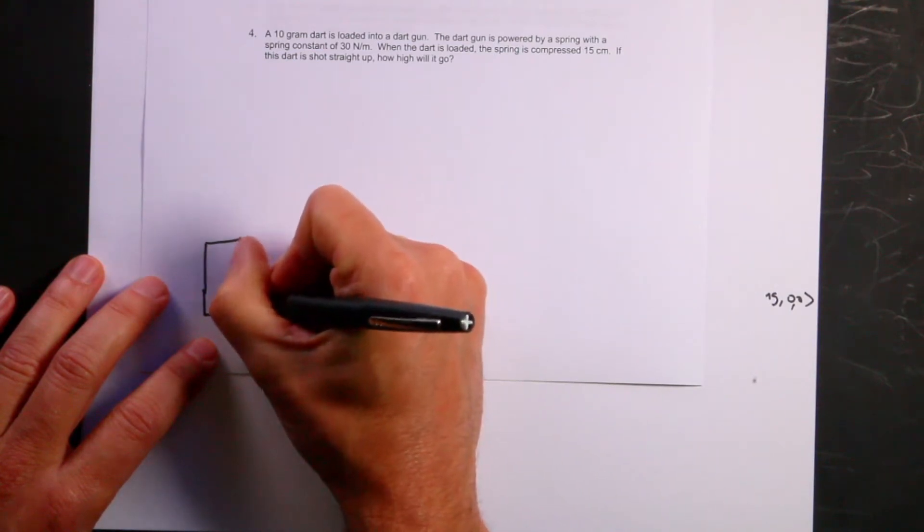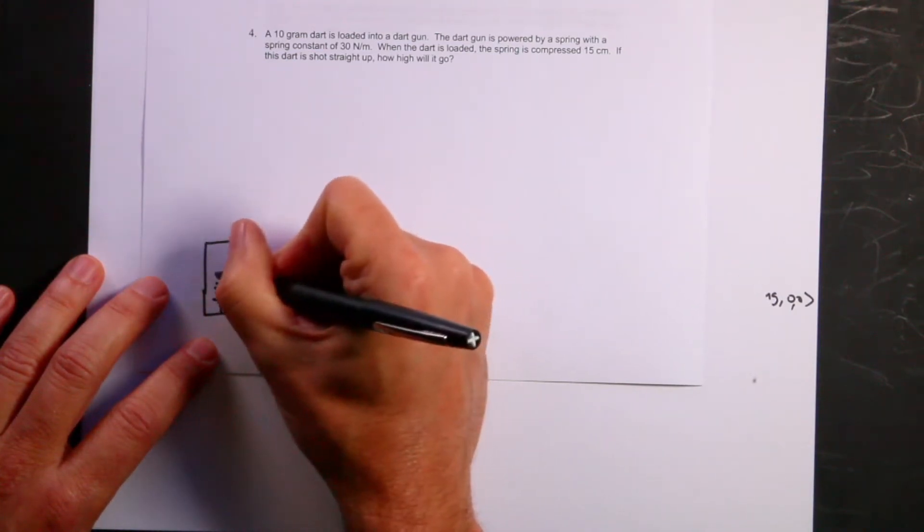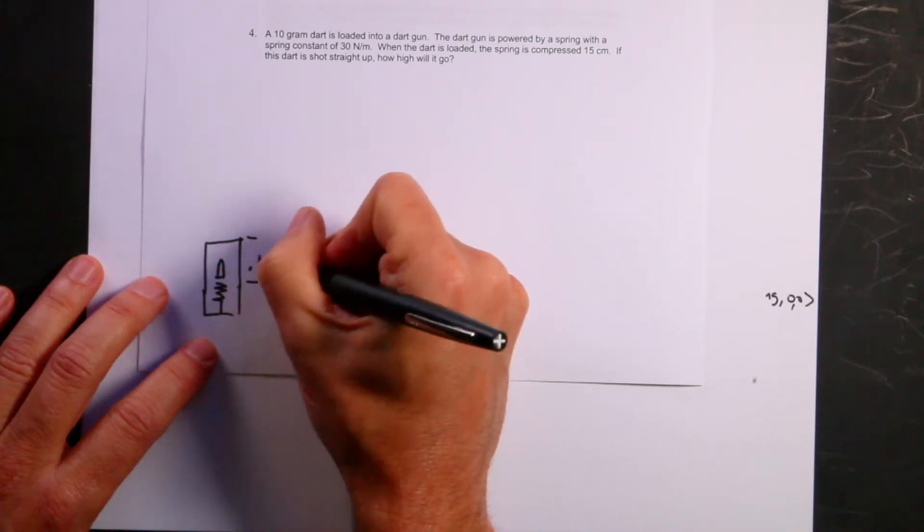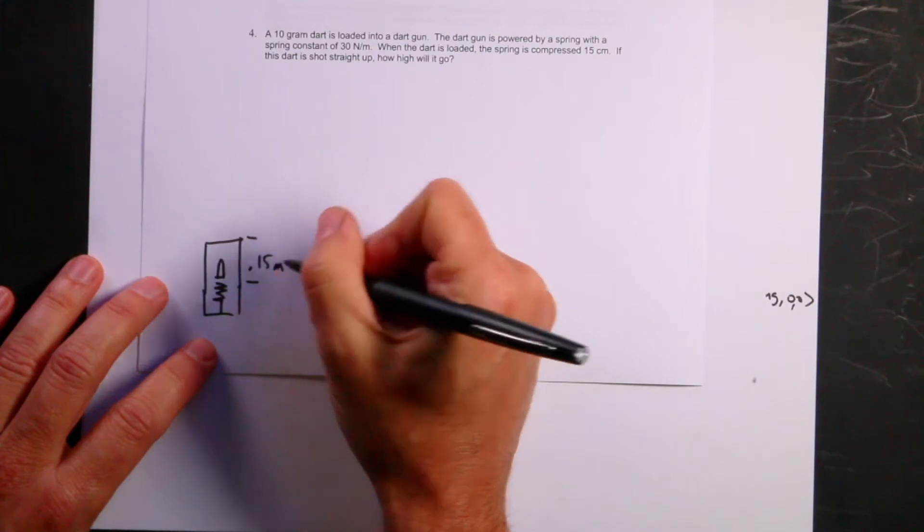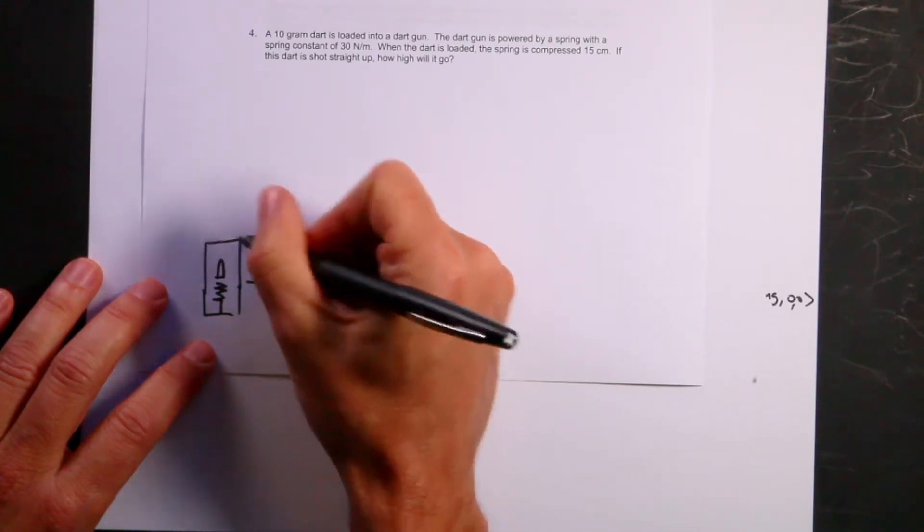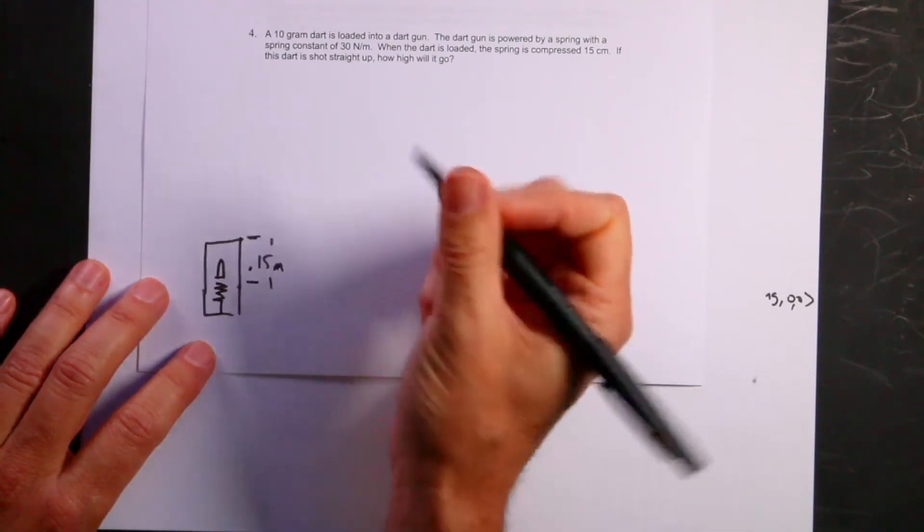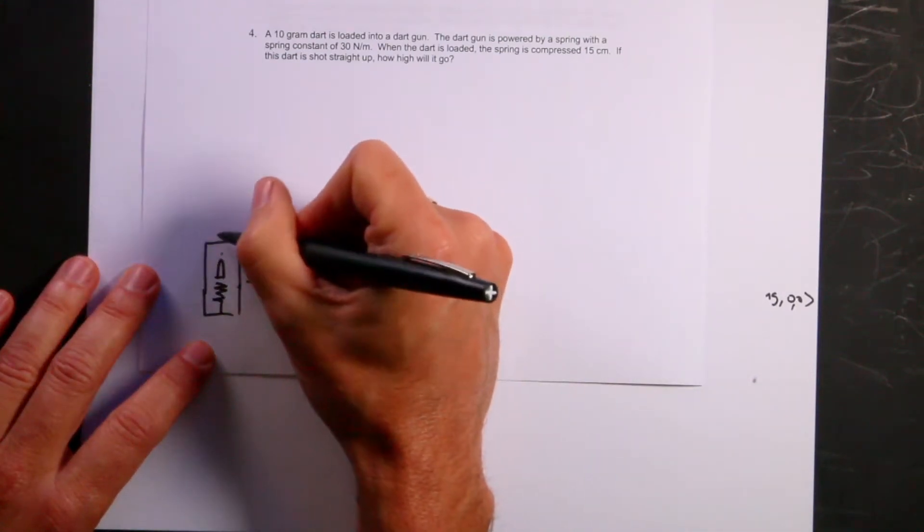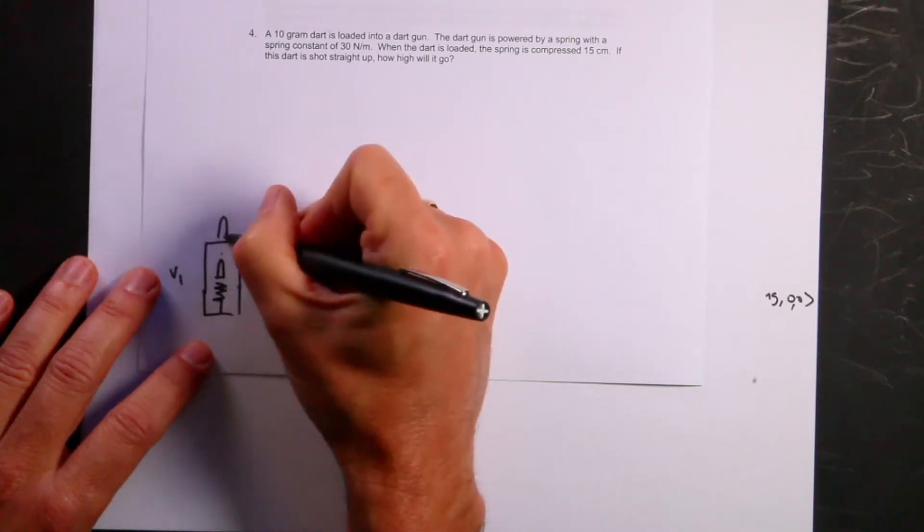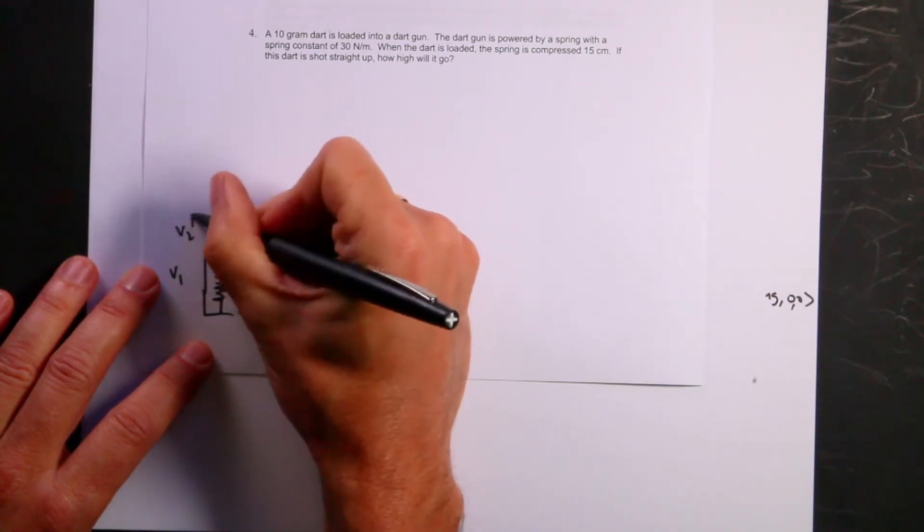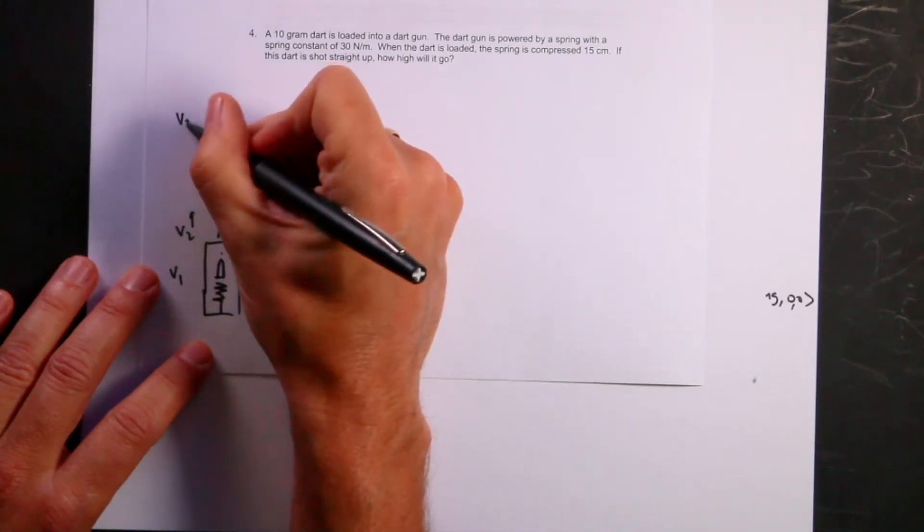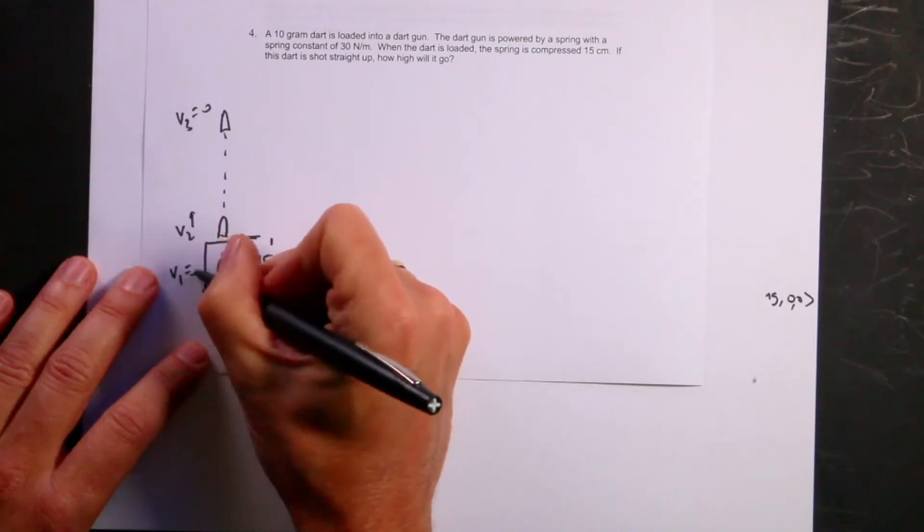Here is my spring, and there's my dart, and this is 0.15 meters, 15 centimeters. That's a pretty big spring dart. You can tell I made up the question, right? Because that's kind of an unrealistic number. And then it gets launched right here. So this is V1, and then V2 is moving this way, and it goes up here. And this is V3 equals 0.